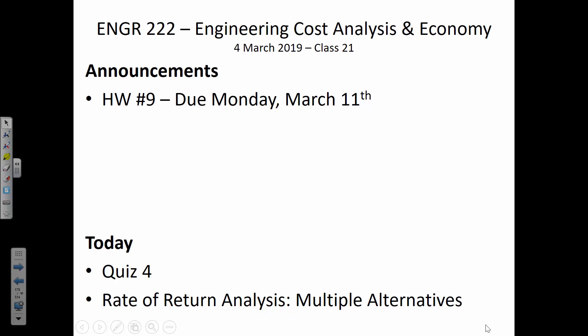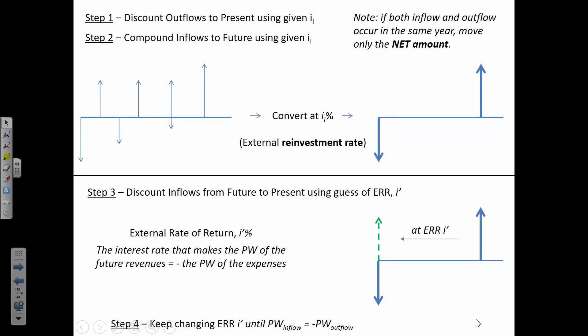The other thing: your next homework assignment, number nine, is due a week from today. Today we're going to talk about the illustration I promised you — why you can't use the internal rate of return to pick the best project. You can only use IRR for initial screening on whether something is acceptable.